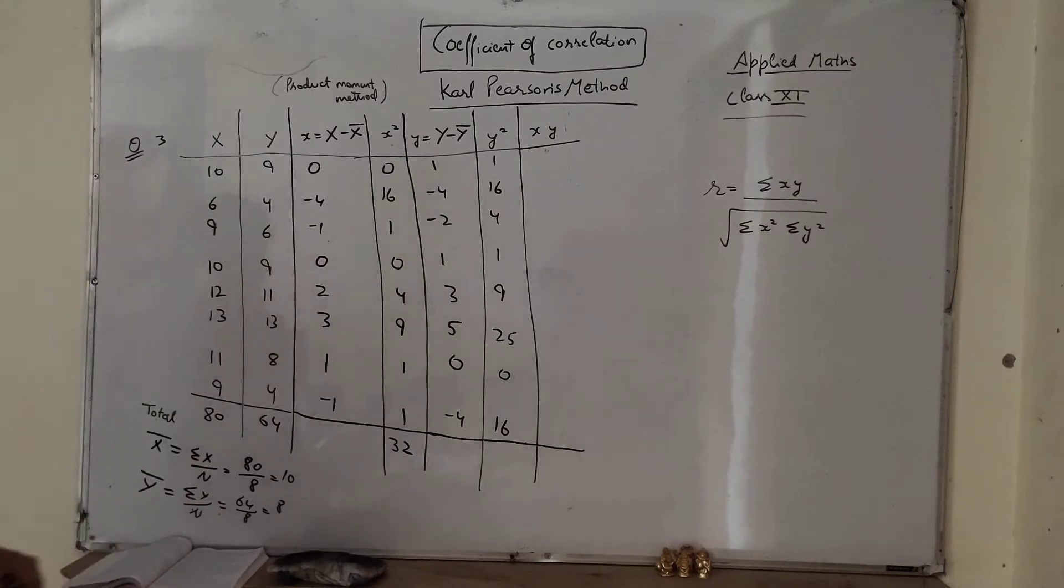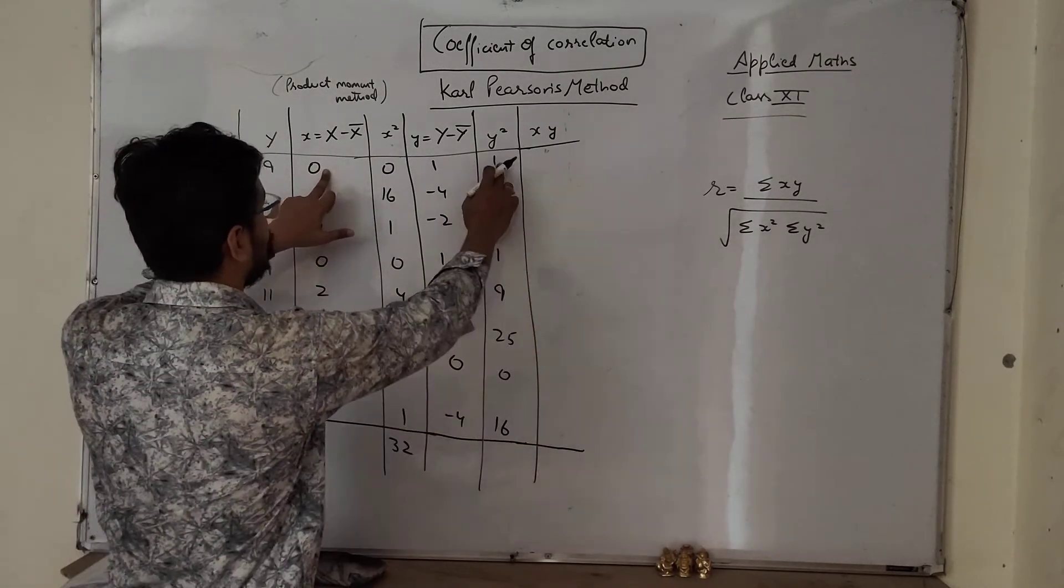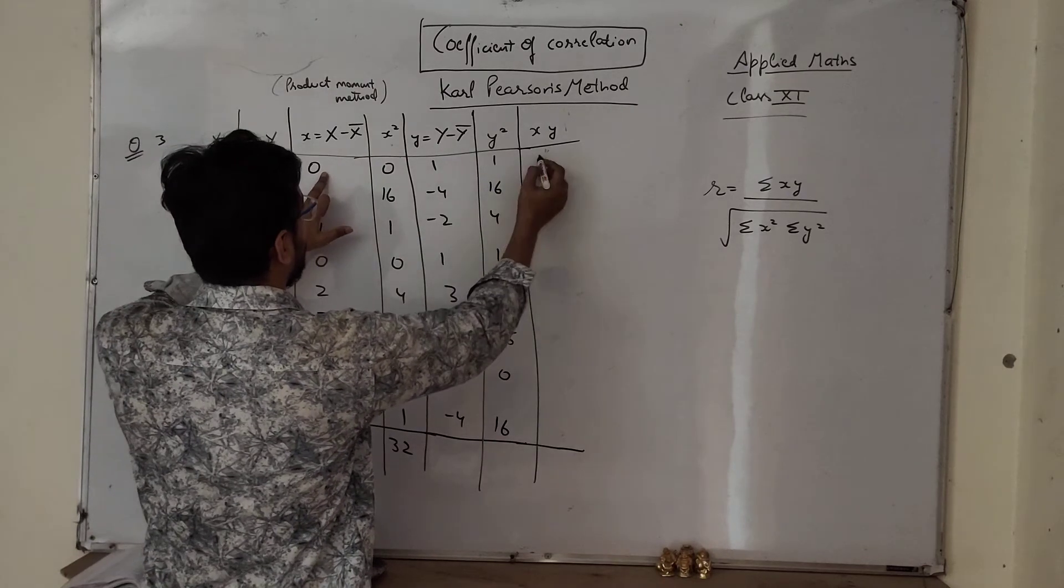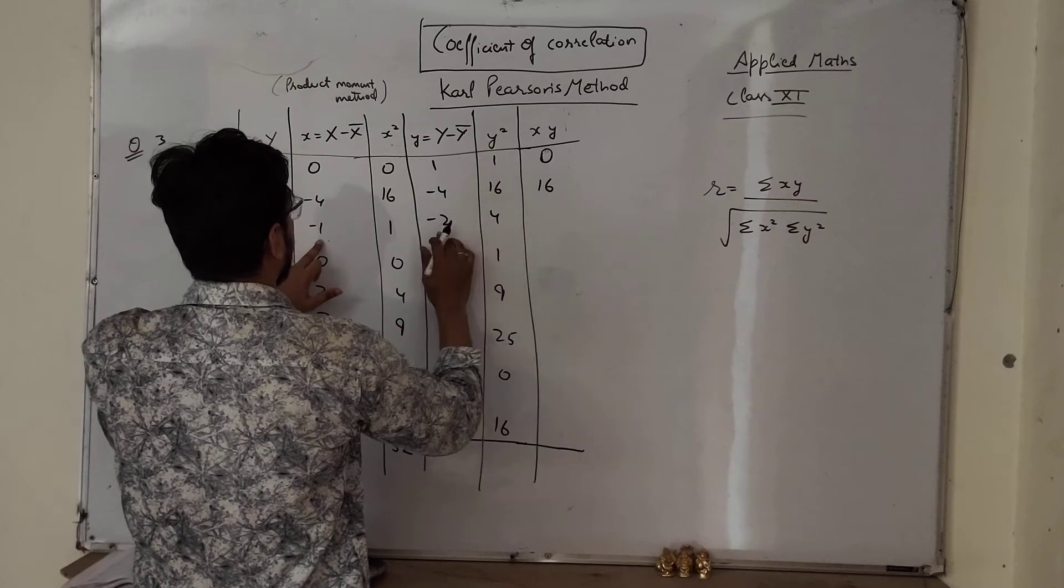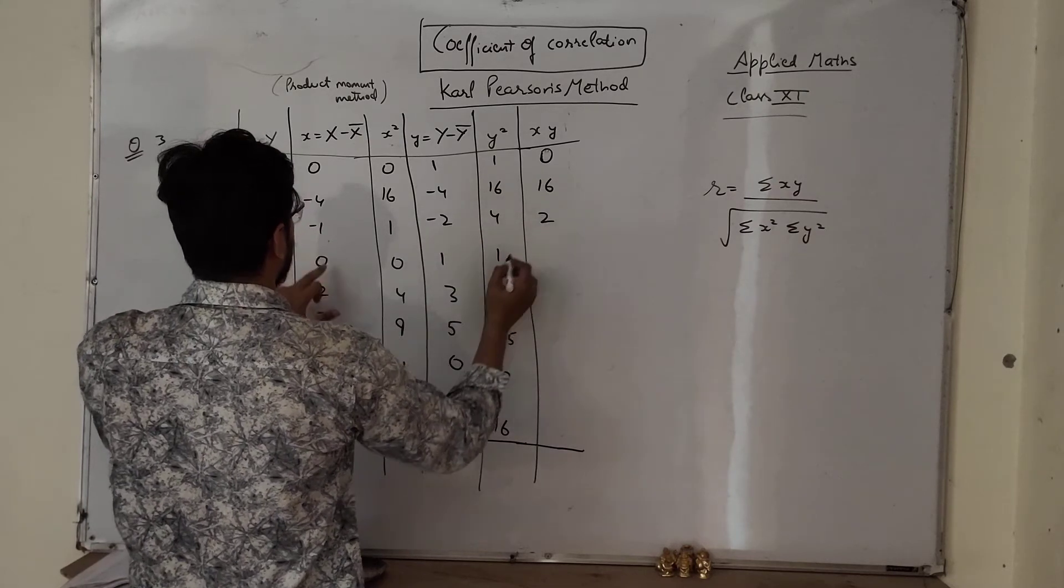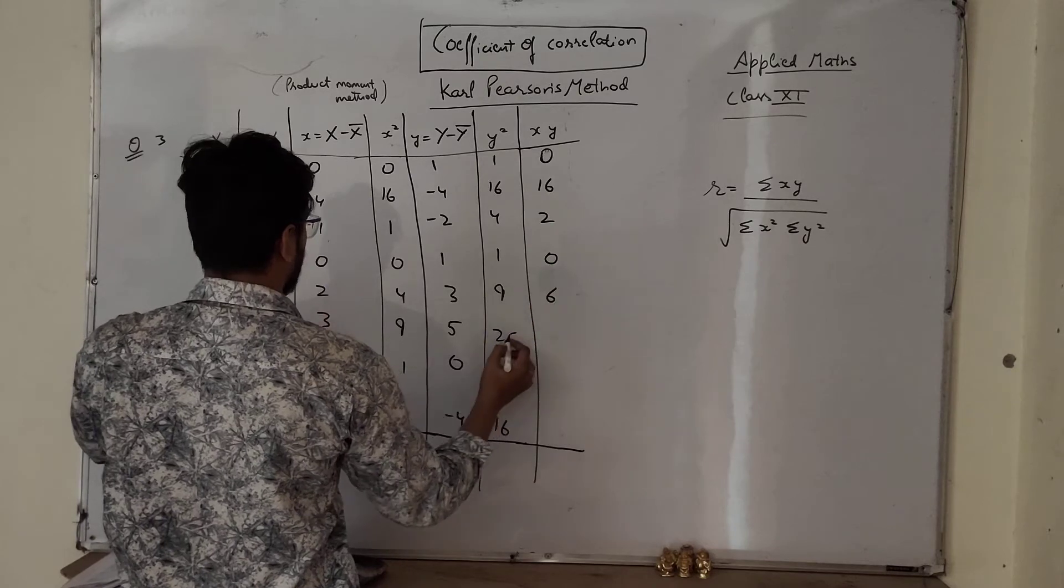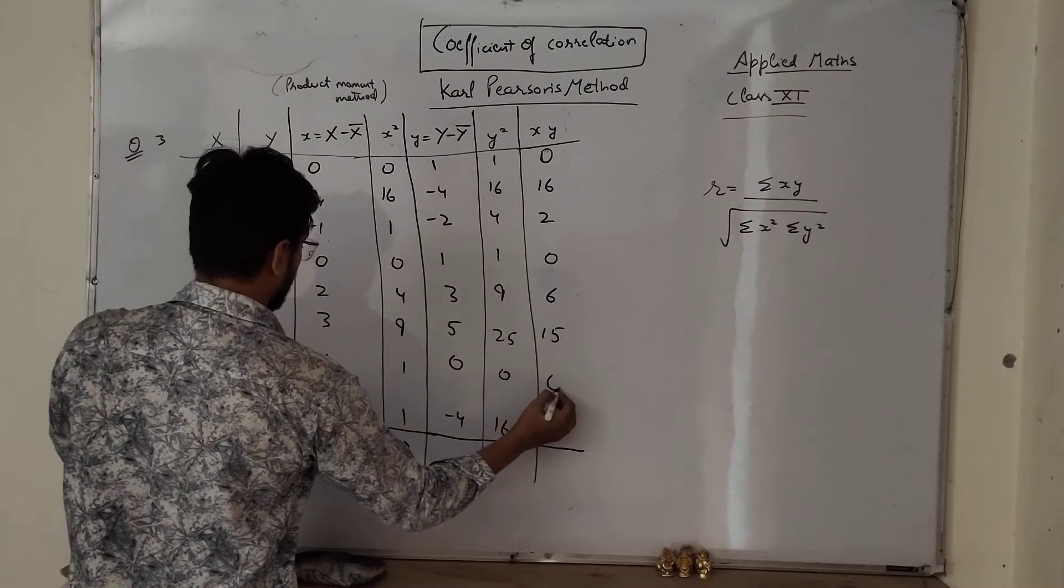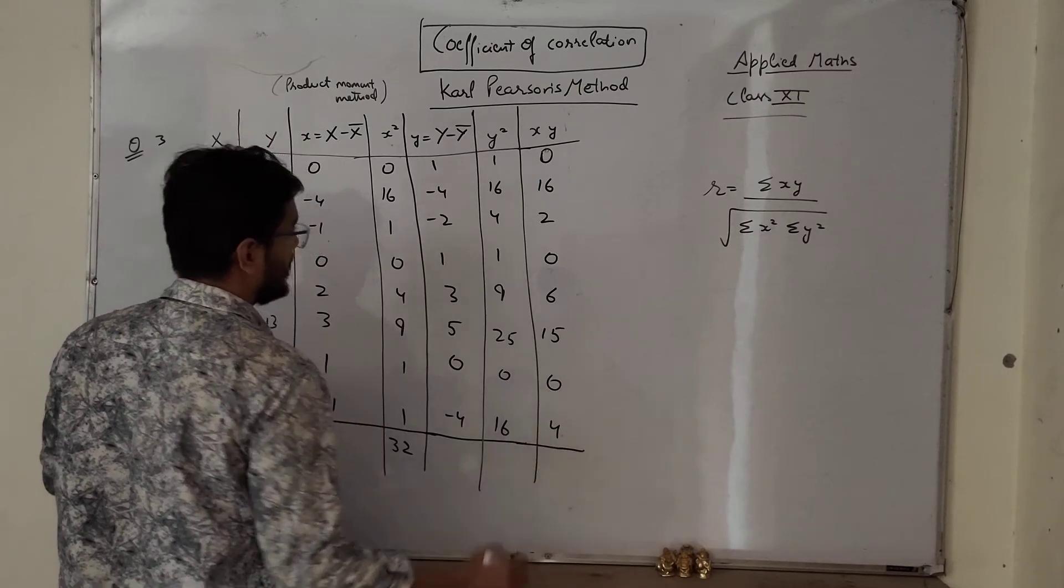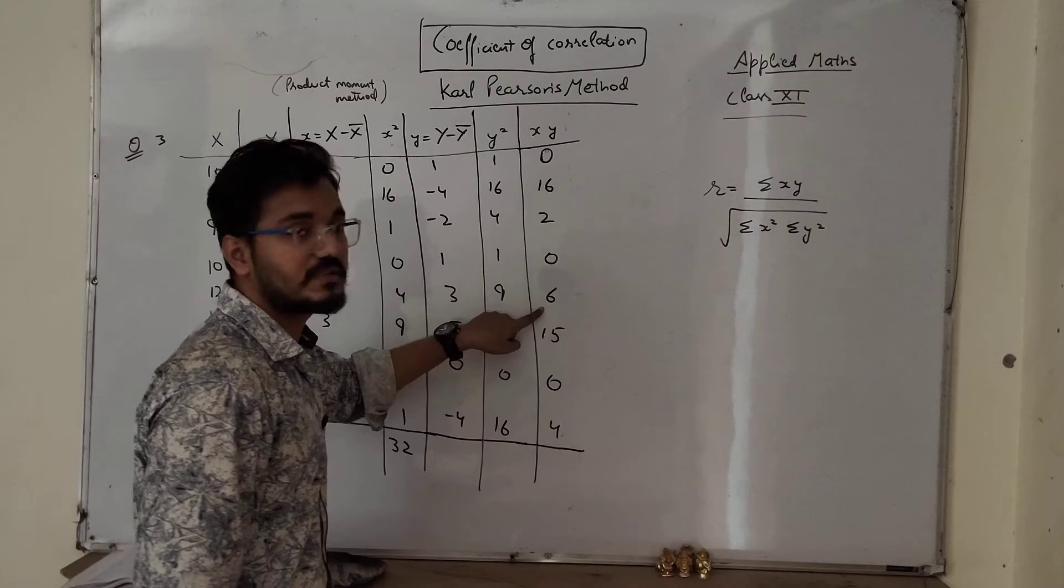So x multiply by y, this multiply by this. 0 multiply by 1 is 0, 4 multiply by 4 is 16, 1 multiply by 2 is 2, 0, 2 multiply by 3 is 6, 3 multiply by 5 is 15, 0, and then 4.